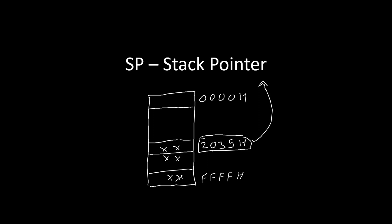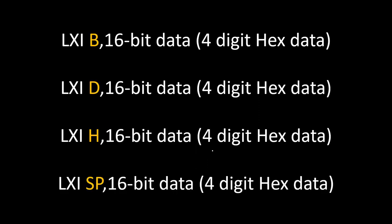The LXI instruction will be of four types: LXI B with 16-bit data, LXI D with 16-bit data, LXI H with 16-bit data — these are the three register pairs — and lastly LXI SP with 16-bit data, which transfers a four-digit hexadecimal value directly into the stack pointer. This instruction is used for initializing the stack pointer.